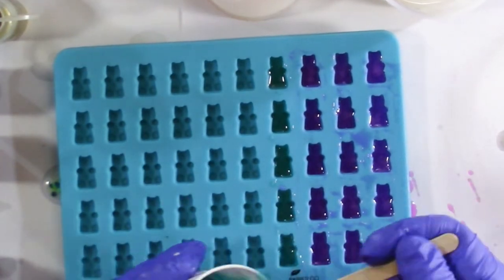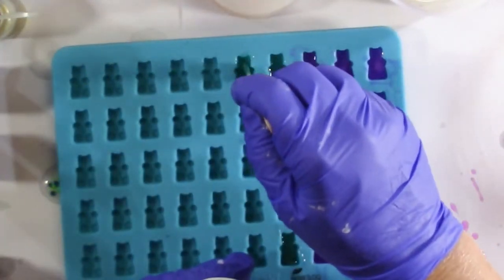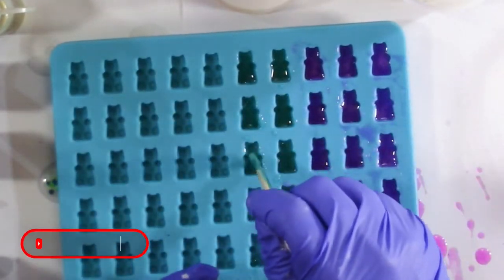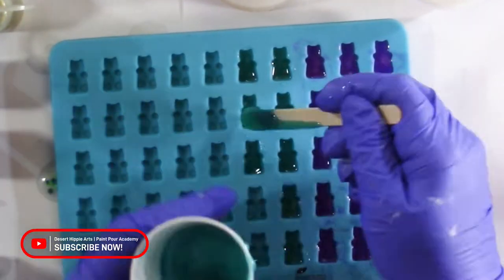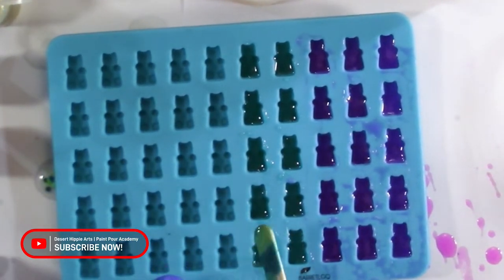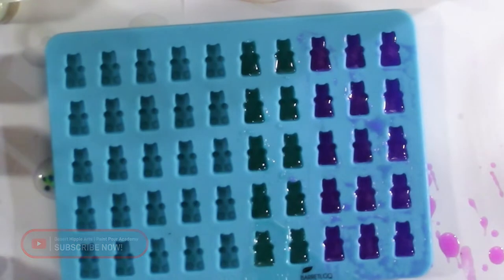I am only filling the cavities up about halfway. I will let them cure several hours until it has gelled hard and then I will add the pin backing and fill the remaining space with clear resin. This mold will make 50 gummy bear pins.